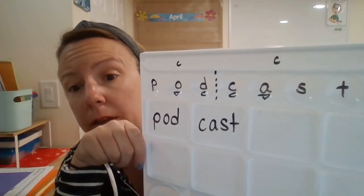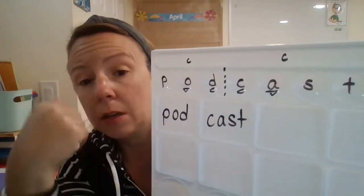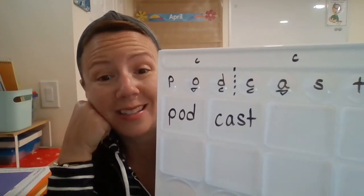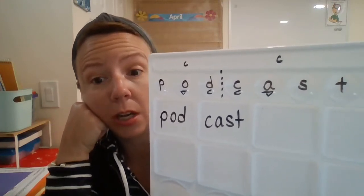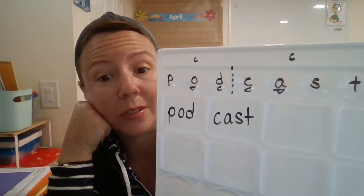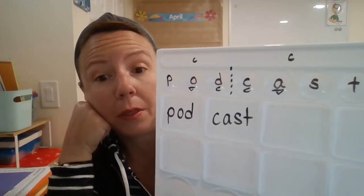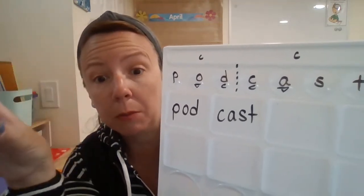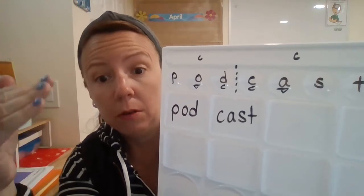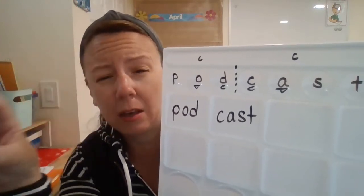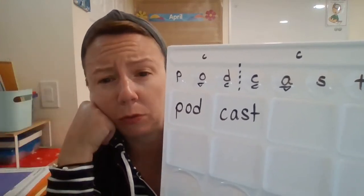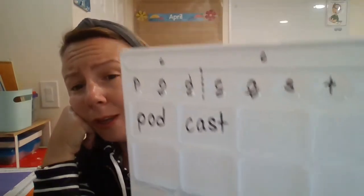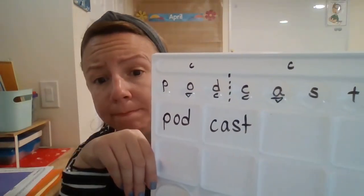This is a dry erase surface. If you hadn't seen the last video, definitely check that out. You can see how I used it with just straight spelling practice with the phonemes and the graphemes. I also used some bubble poppers with those as well. It's a really versatile tool.